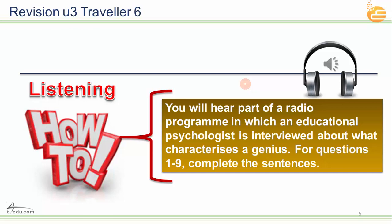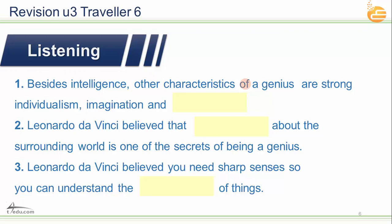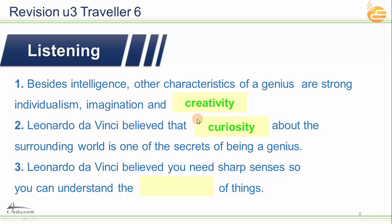Now we're going to have some questions after the listening. Let's fill the spaces as we heard. Besides intelligence, other characteristics of a genius are strong individualism, imagination, and creativity. And for two, when he spoke about Leonardo da Vinci, he believed that curiosity about the surrounding world is one of the secrets of being a genius.